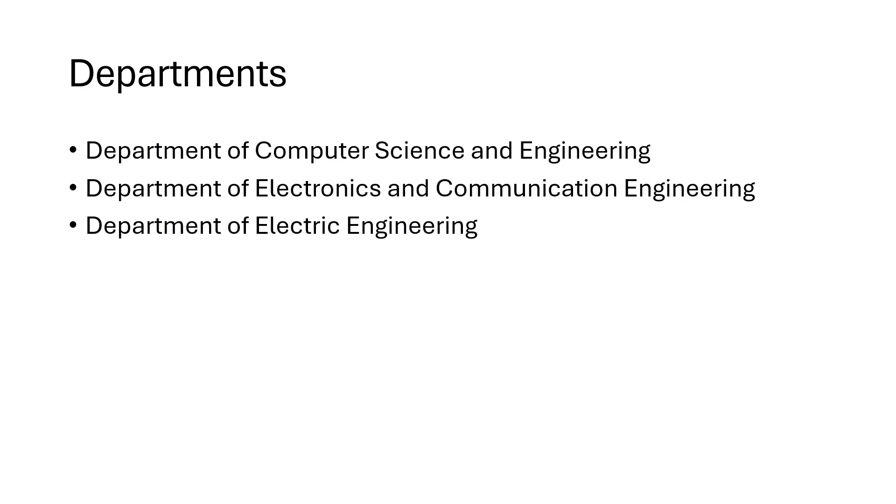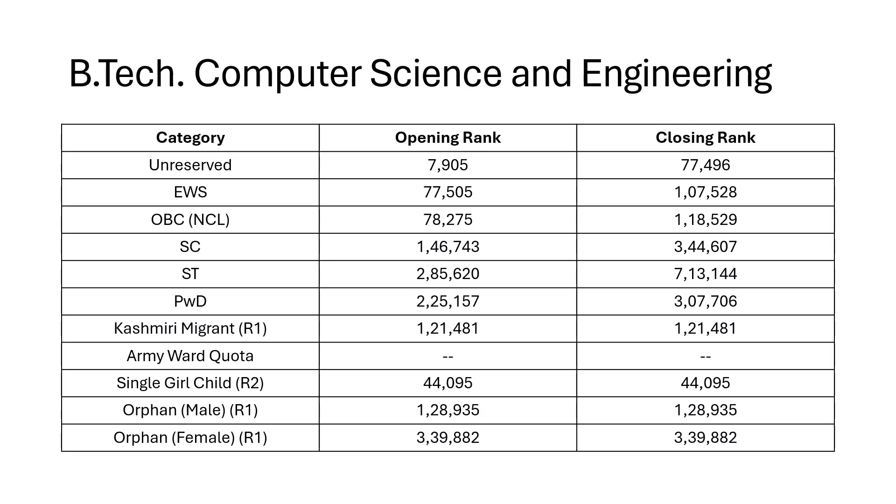We have three departments: CSE, ECE, and the exam is JEE Mains. The ranks mentioned are the Common Rank List ranks, not any category rank. We will be talking about things based on Round 8. If Round 8 rankings are not available for a particular course in a particular category, we have taken the rank of the last available round, and that has been mentioned. Jumping right in for Computer Science and Engineering.